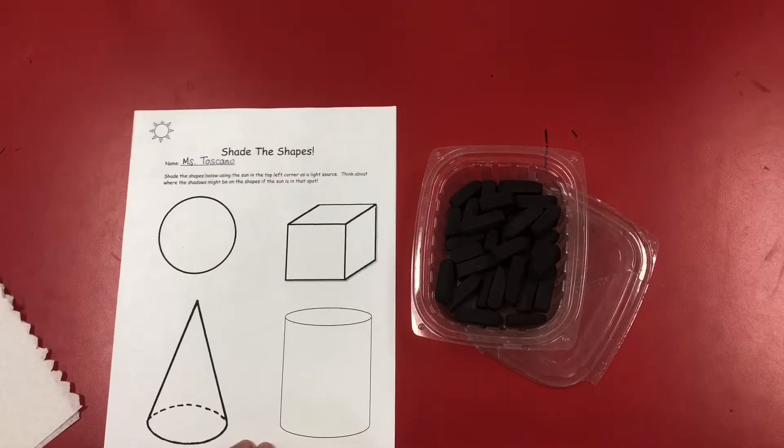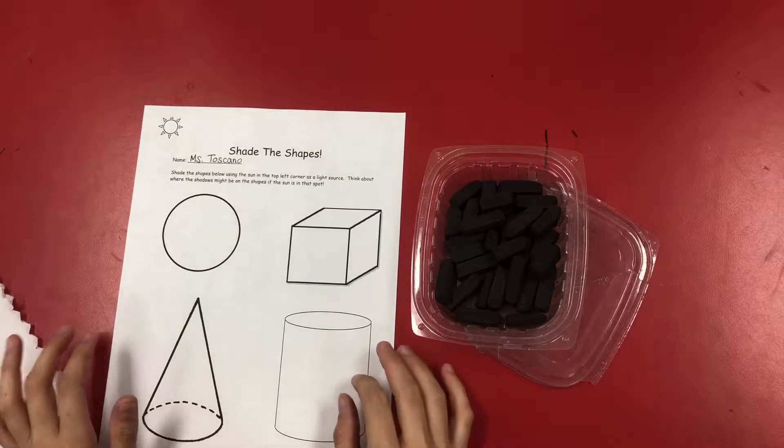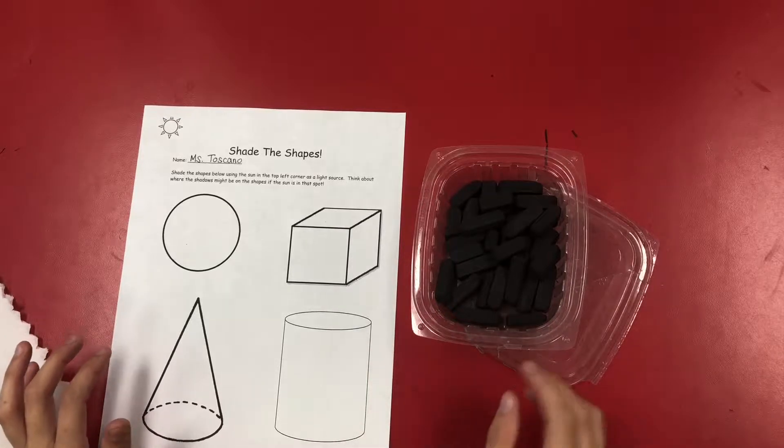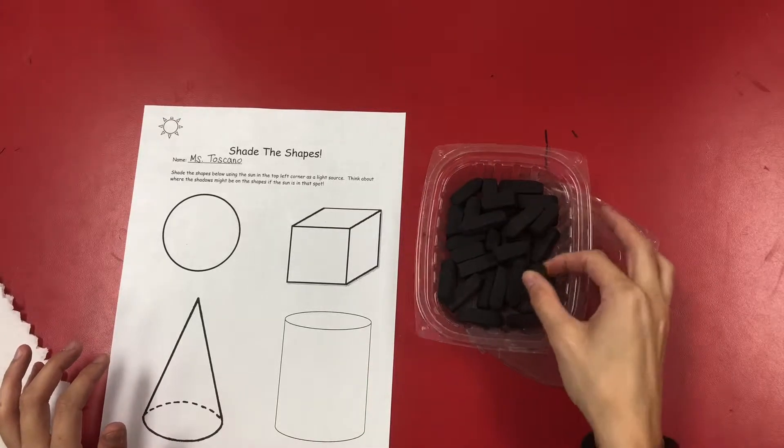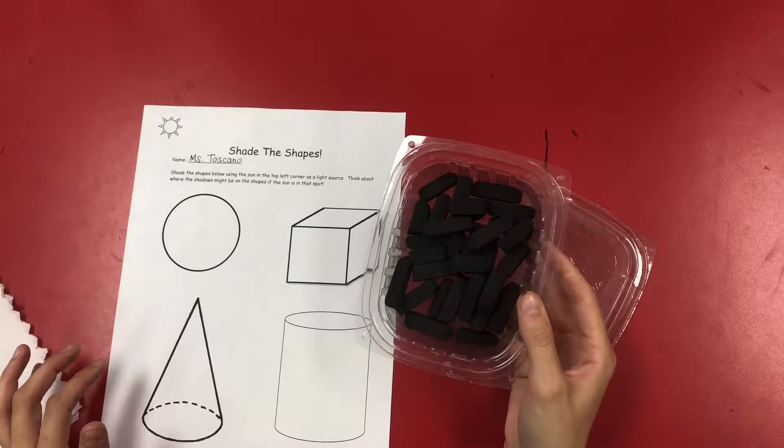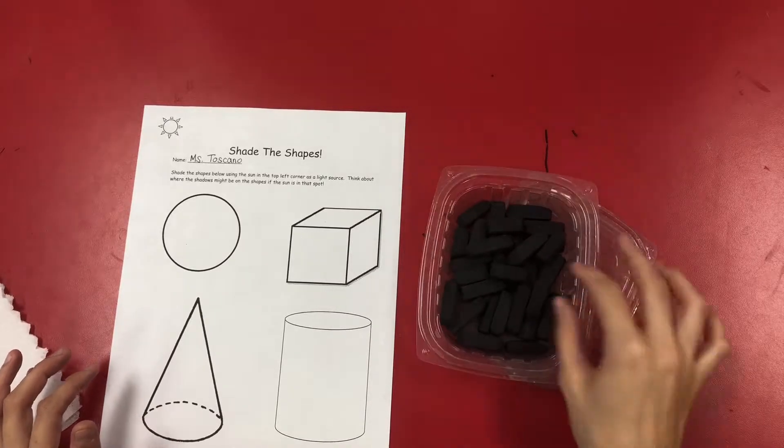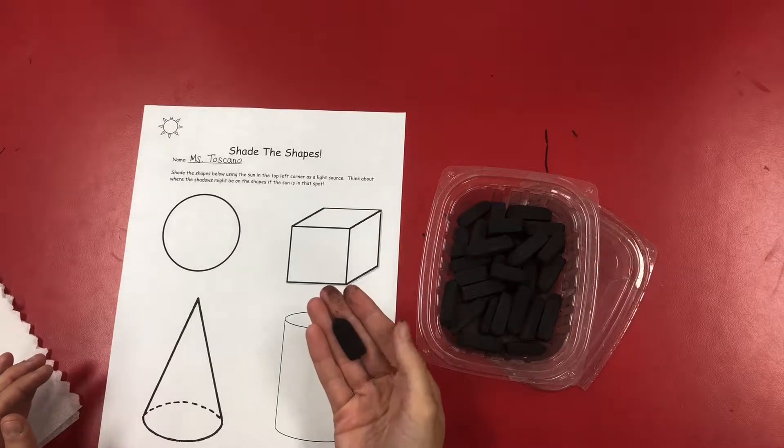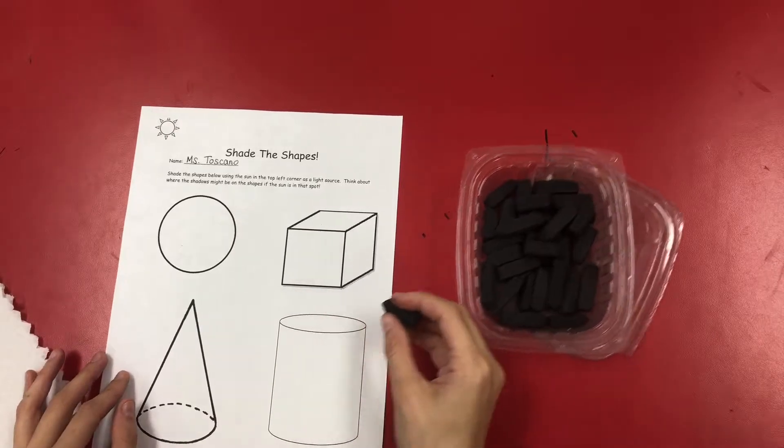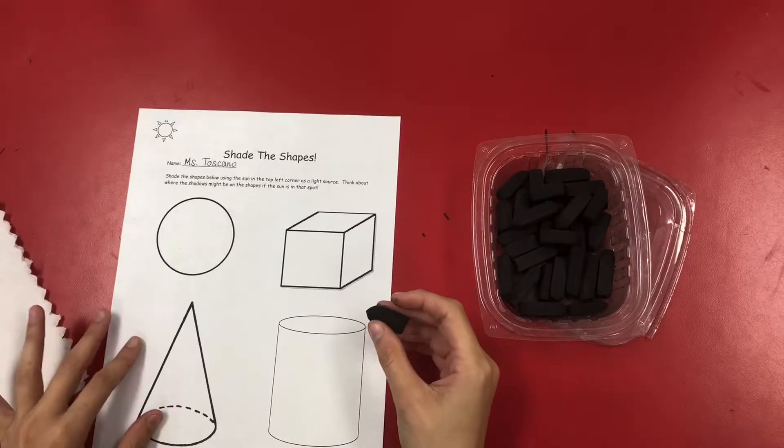In order to shade the shapes to turn them from two-dimensional into three-dimensional, we're going to be using charcoal. I have little charcoal sticks here for you to use, and they're really soft. You can notice it's already starting to come off onto my hand, so they're really easy to use, especially on the paper.